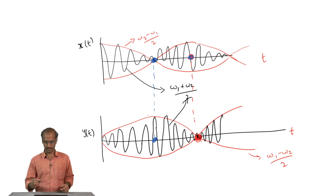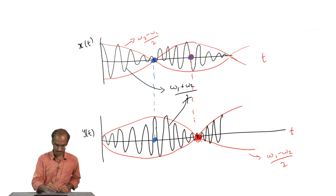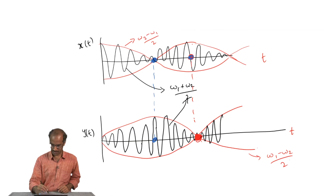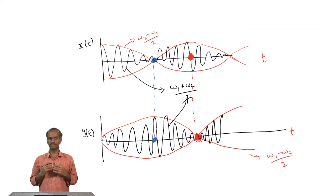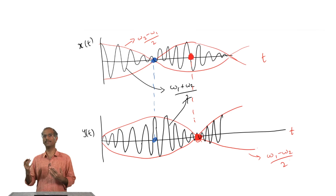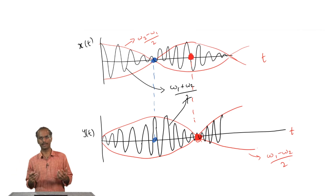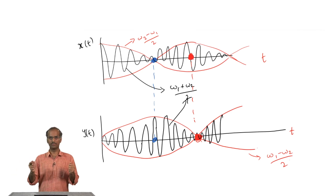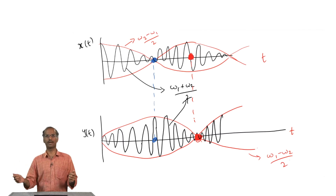At a later instant — looking at the red points — all the energy is with the x oscillator and the y oscillator has none. This scenario is going to repeat itself again and again: the energy keeps shuttling between one oscillator and the other and back to the first oscillator, and so on.